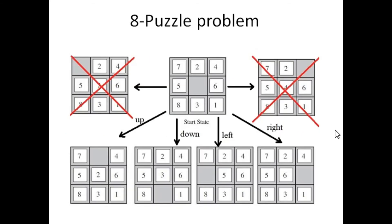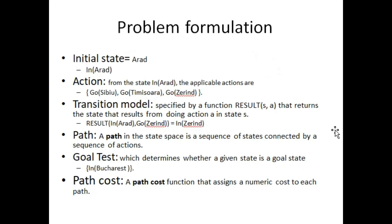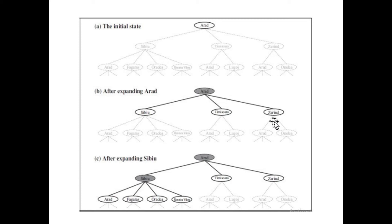We can represent any problem in the form of a tree. Look at this figure — Arad is the initial state at the root. We first check whether Arad is our goal. Since it is not, we can move towards the next states: Sibiu, Timisoara, and Zerind. These three are our possible actions at this state, and our transition model determines which state we move to next.